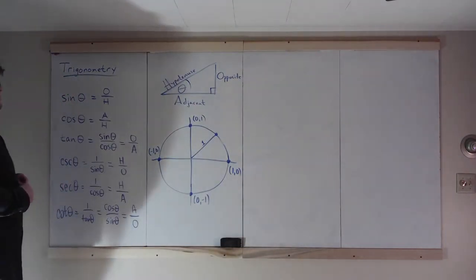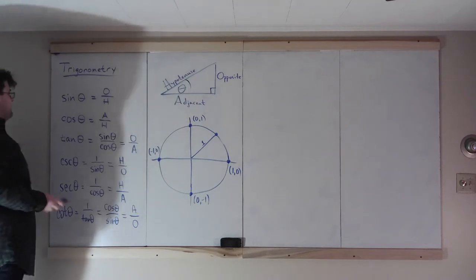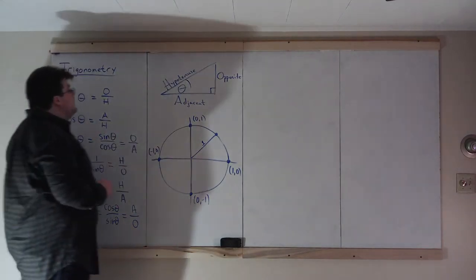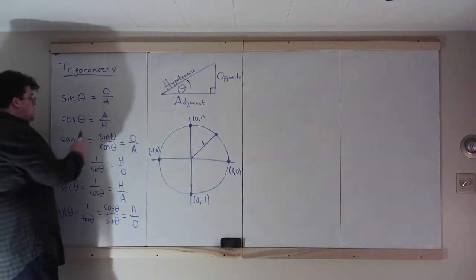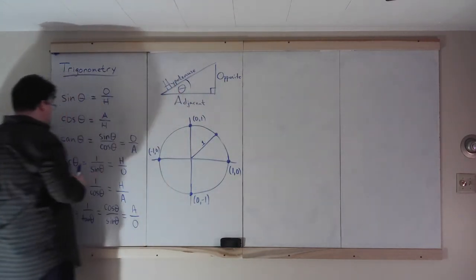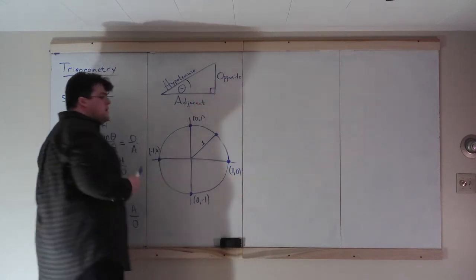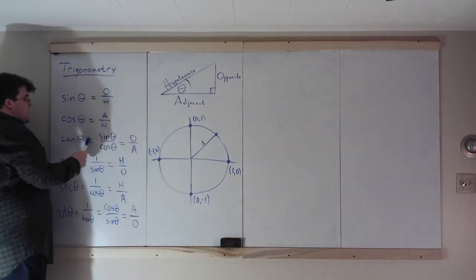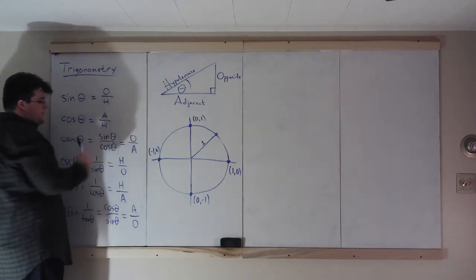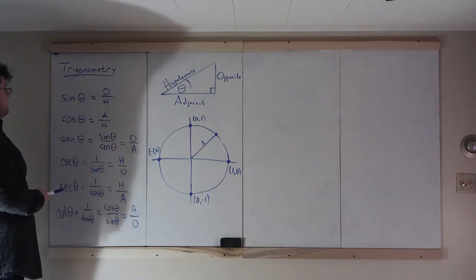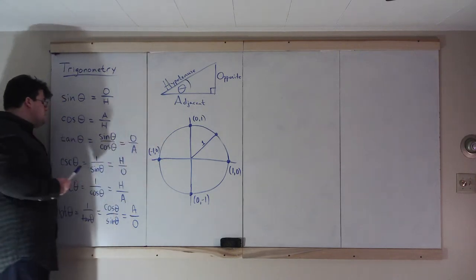The six trig functions are defined in terms of those sides. Sine of theta is opposite over hypotenuse. Cosine of theta is adjacent over hypotenuse. Tangent of theta is opposite over adjacent; it's also equal to sine of theta over cosine theta. There will be examples where both of those definitions are useful.